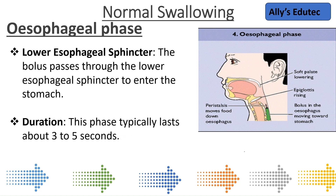The duration of the esophageal phase typically lasts about 3 to 5 seconds. To revise: there are 4 stages in normal swallowing. The first phase is the oral preparatory phase — food mixes with saliva, we chew it, and with the help of the muscles of the lips and tongue the food is made into a bolus. In the second phase, the oral phase, the tongue pushes the food backward into the back of the throat. From there, the third phase — the pharyngeal or swallowing phase — starts.